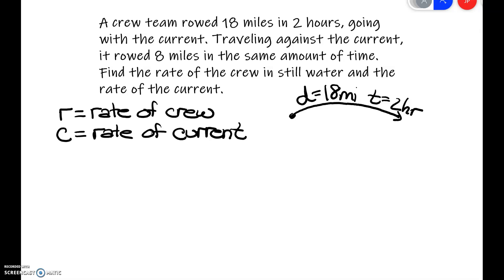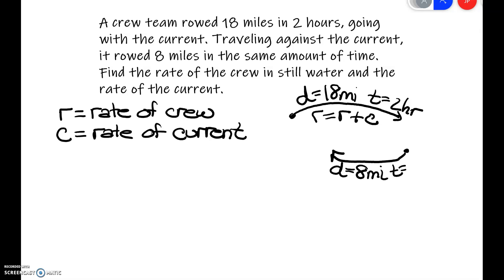Going with the current means it is helping us, so we add the current to the rate of the rowers: R plus C. Traveling against the current means we are coming back against the current. The distance is only 8 miles, and it takes the same 2 hours. Going against the current, the rate becomes R minus C — the rate of the rowers minus the rate of the current.